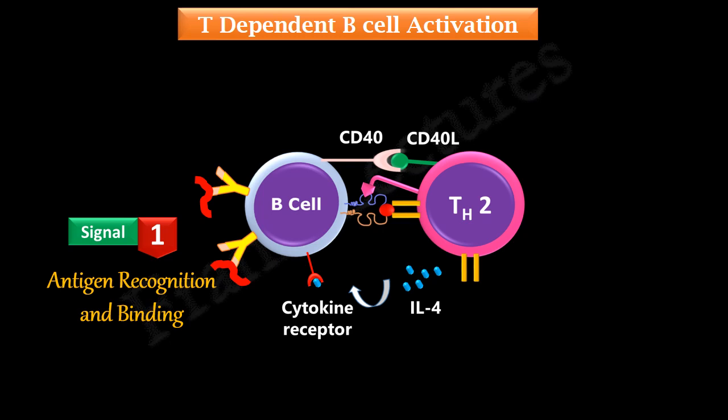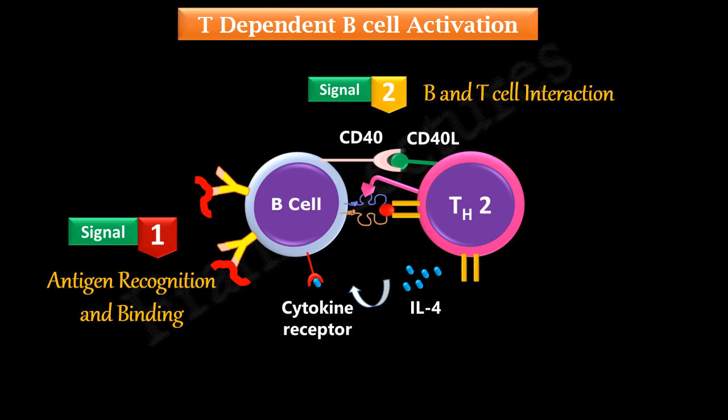Once signal 1 is received by the B cell, the B cell now interacts with the T helper cell. Note that this T helper cell is also activated by the same antigen to which the B cell binds. The CD40 receptor of B cells binds to the CD40 ligand of T helper cells, generating the second signal for B cell activation. Finally, the third signal is provided by cytokines secreted by the T helper cell, resulting in proliferation and differentiation of B cells into antibody-secreting plasma cells.